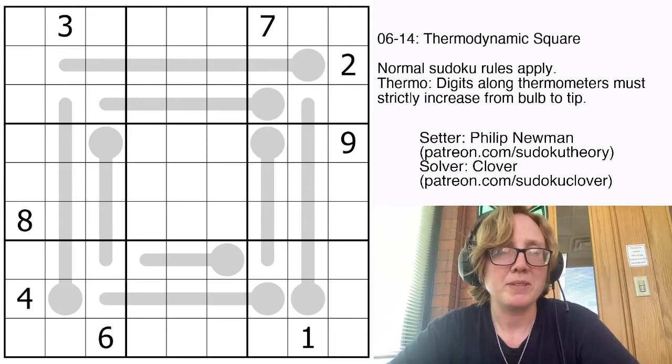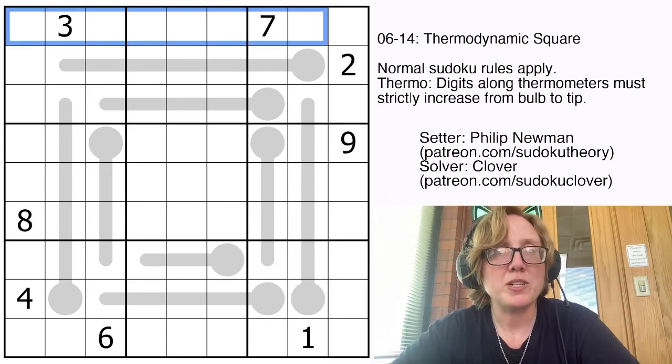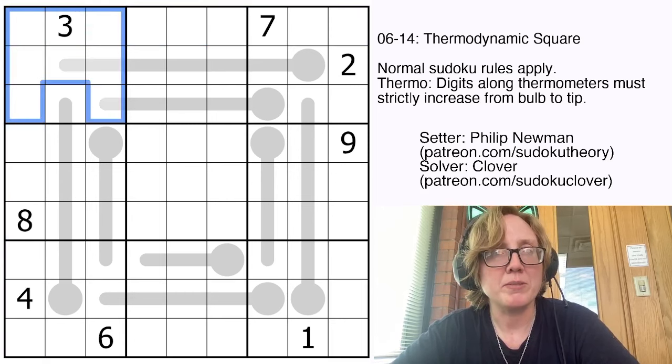We have normal Sudoku rules, so we're placing the digits 1 through 9 once each in each row, each column, and each heavily outlined 3x3 region.